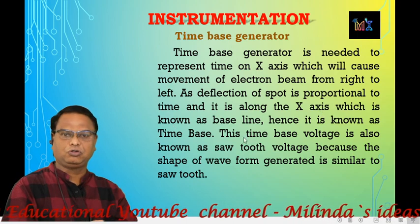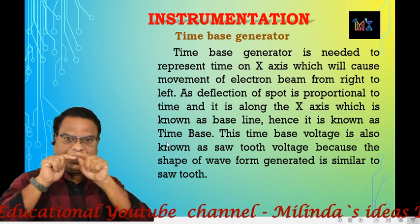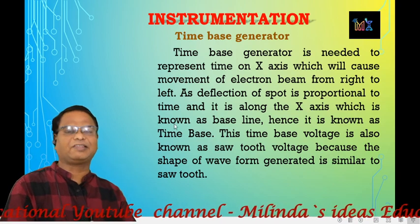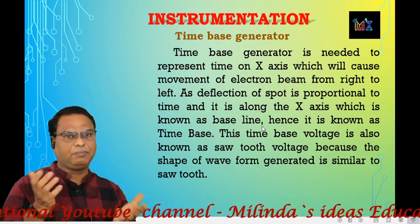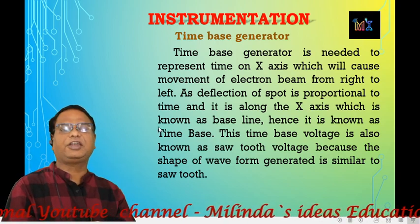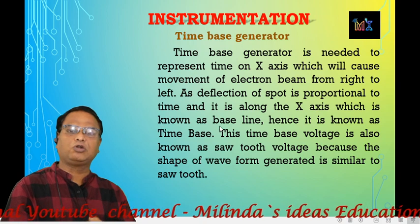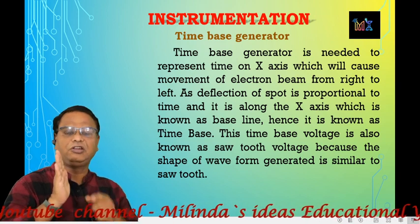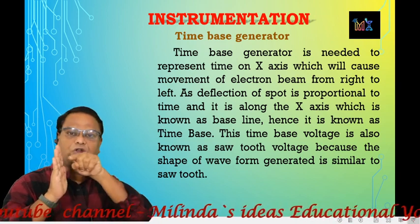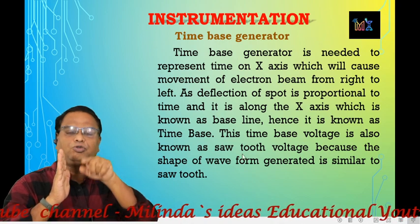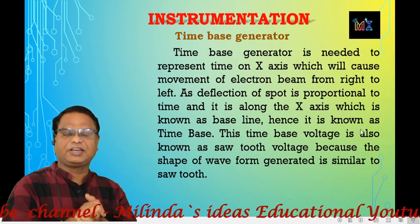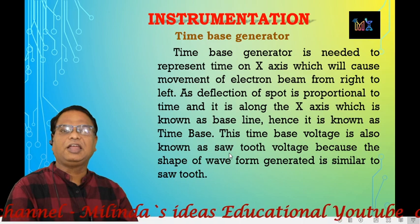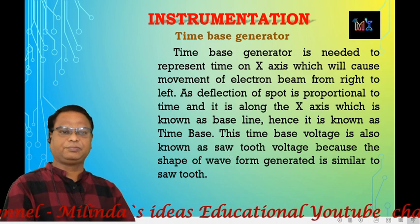Along the x-axis we measure time. The line we draw along the x-axis is known as a baseline, and that is why the generator is also known as the time-based generator. The signal which moves along the x-axis, on which we measure time, and that line is called the baseline — this generator is known as the time-based generator.